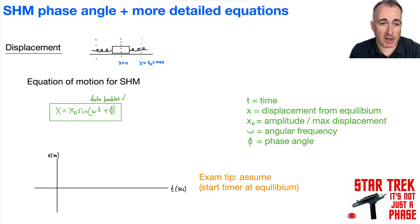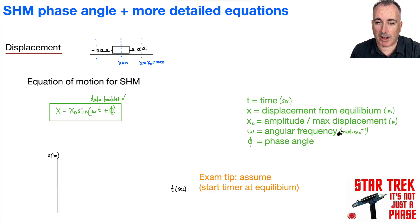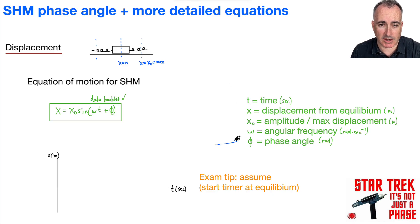Let's define our variables. t is time in seconds. x is displacement from equilibrium in meters. x₀ is the amplitude or maximum displacement, also in meters. ω is the angular frequency in radians per second. And finally, φ is the phase angle, measured in radians — and this one is kind of weird, so that's why we're going to talk about it now.